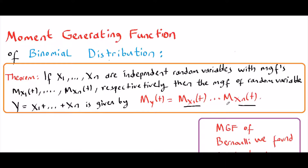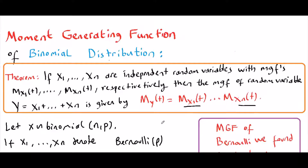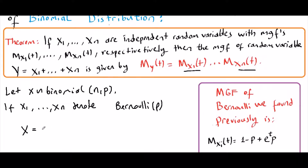We know that a binomial random variable is the sum of independent Bernoulli random variables. So let x be binomial distributed with parameters n and p. If x1 up to xn denote n independent Bernoulli random variables with parameter p, then we can rewrite x as x1 plus up to xn.